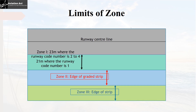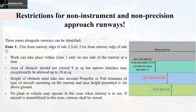Here in this image, you can see that the runway strip is divided into three zones. Based on the criticality of operations, the type of aircraft operations taking place on the runway, the runway surface conditions, and crosswind, works are permitted on the runway strip. Let us look at the restrictions for non-instrument and non-precision approach runways. Zone 1 is 23 meters from the runway edge where the code is 2, 3, or 4, or 21 meters from the runway edge where the code is 1.